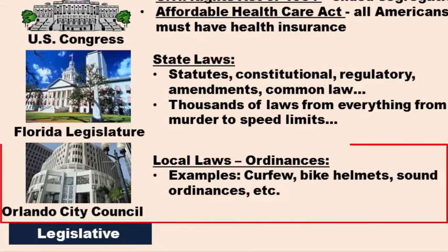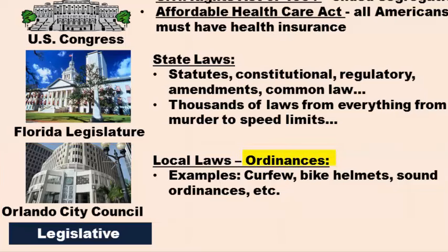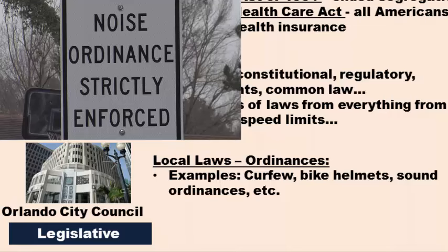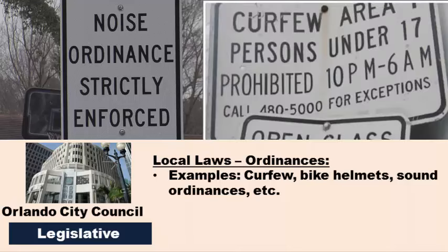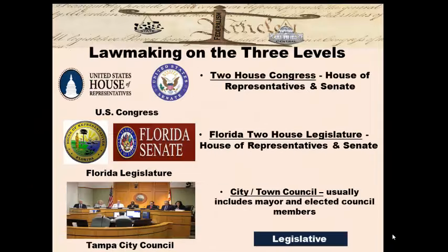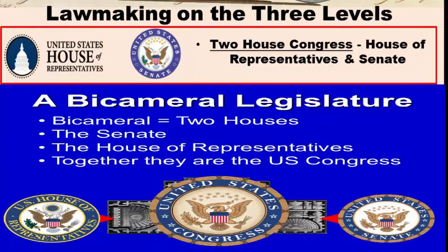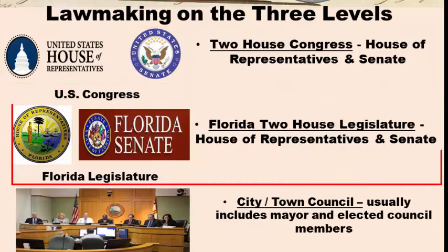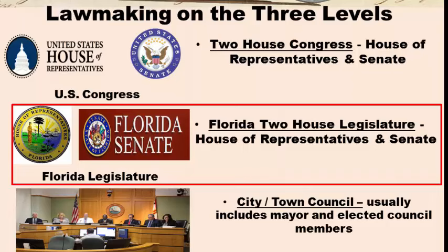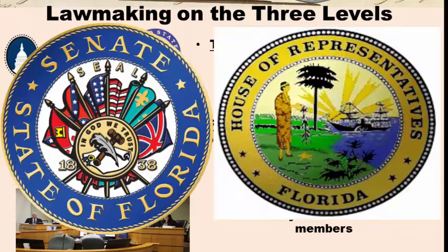Local governments also pass laws, and these local laws are called ordinances. Local ordinances can cover a wide variety of issues — for instance, the village of Ilemen has ordinances on how loud music can be after certain hours, and a curfew for kids under 18. The U.S. Congress is a two-house legislature — bicameral — made up of a Senate and a House of Representatives. Almost all states have a two-house legislature as well; only Nebraska doesn't. The vast majority, like Florida, use the same names: a House of Representatives and a Senate.